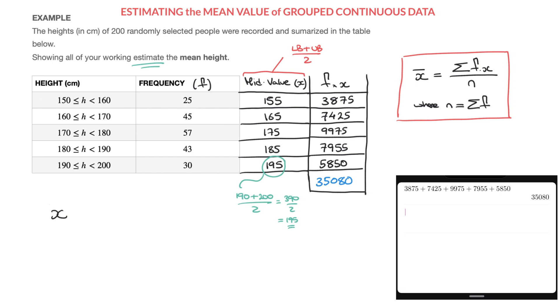The mean height, or I'll just say x with a bar on top of it, is equal to the sum of all the f times x's, which we've just seen as 35,080.